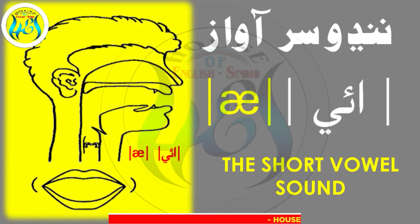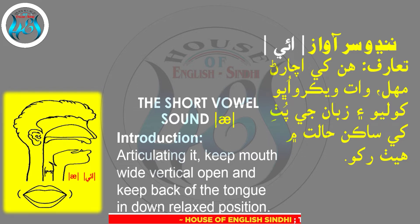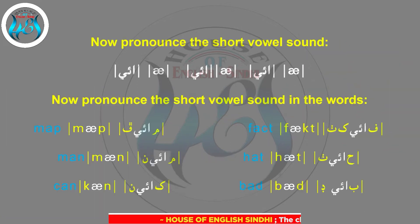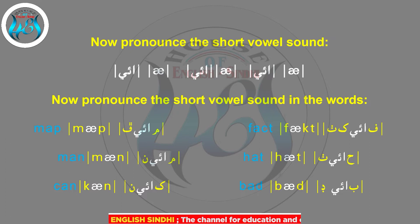The short vowel sound /æ/: articulating it, keep the mouth wide vertically open and keep the back of the tongue in a down relaxed position. Now pronounce the short vowel sound like sheep. Now pronounce the short vowel sound in the words.